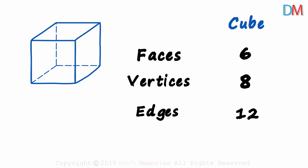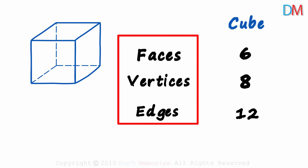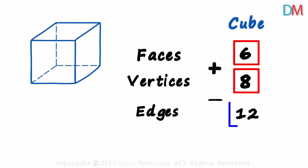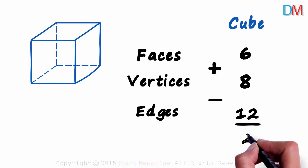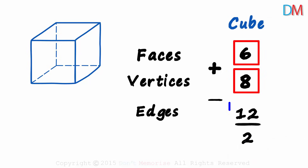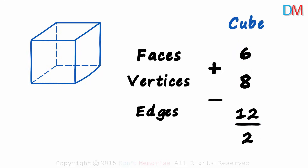Now here's the important question: is there a relation between these three parameters of a straight face solid? The answer is yes. For any straight face solid, if we add its number of faces to its number of vertices and then subtract the number of edges, we get one special number — two. For a cube, six plus eight minus twelve gives us two. And this holds true for any straight face solid.